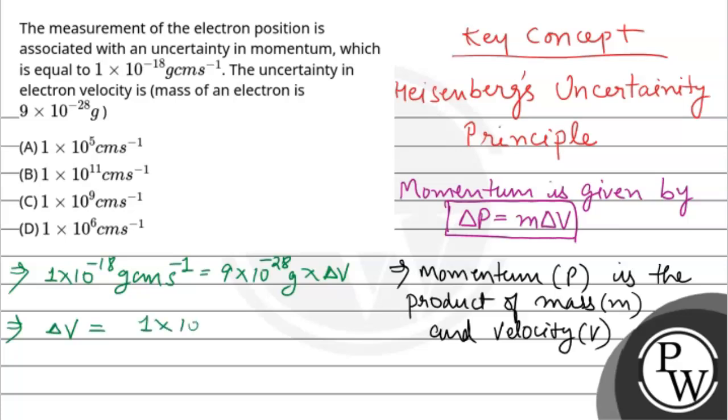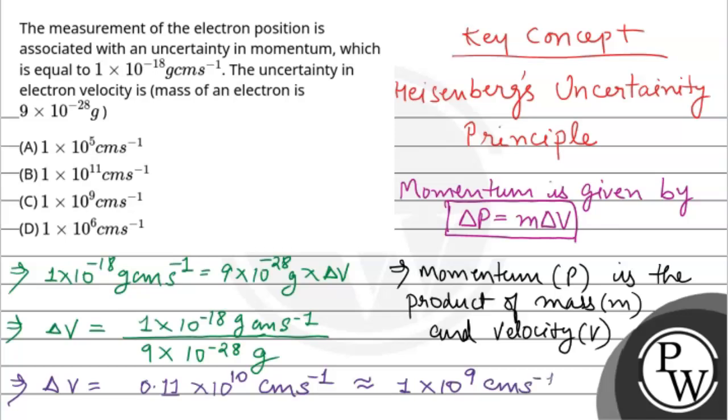0.11 × 10^10, or we can write it as 1 × 10^9 centimeter per second.